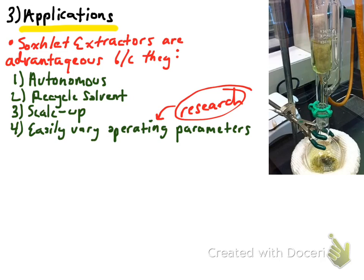Soxhlets are also highly scalable — various sizes exist going up to very large volumes, though larger scales add some complexity. You can also easily vary operating parameters, which is a key component in any research investigation where you want to examine the effect of increasing sample amount, increasing solvent relative to sample, changing the heat, or varying the condenser temperature — all things that are easily changeable within the setup.